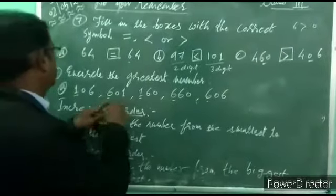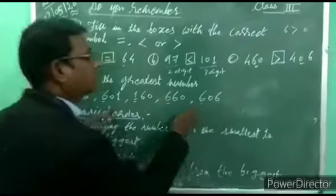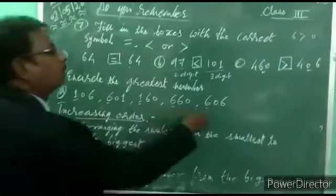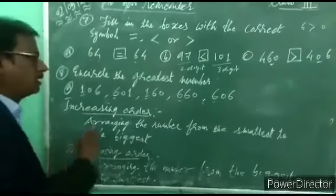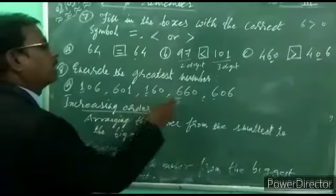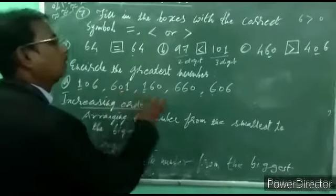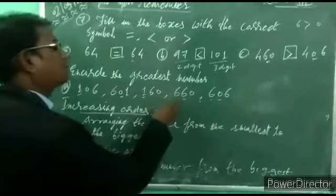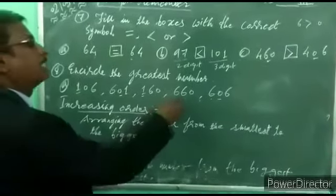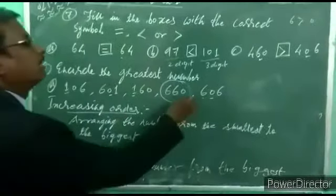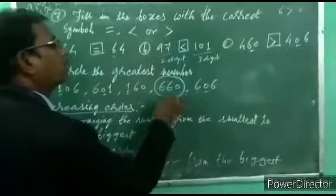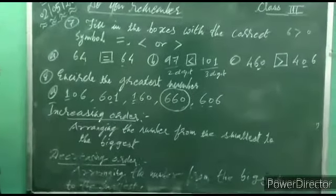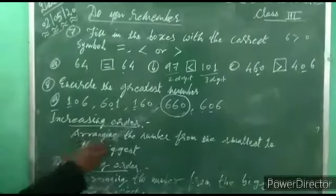Among 601, 660, and 606, we have to select the greatest number. The hundreds place is the same for all three. Now compare the tens place: here 0, here 6, and here 0. 6 is greater, so the greatest number is 660. Circle 660 — 660 is the greatest number among 106, 601, 160, 660, and 606.